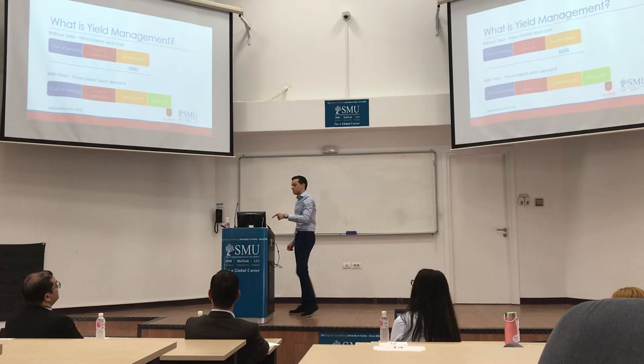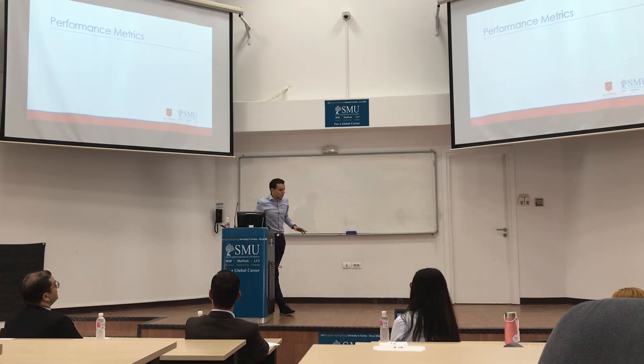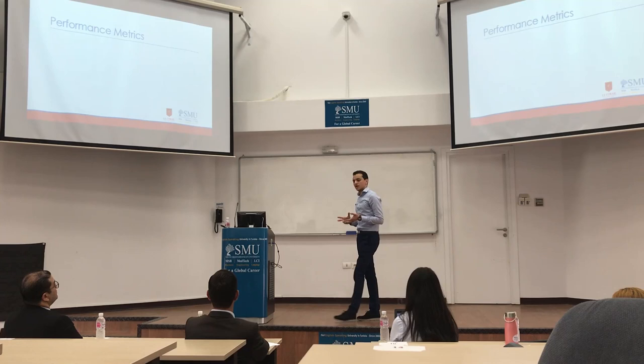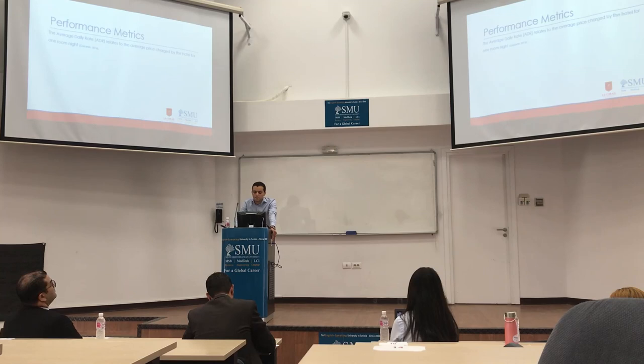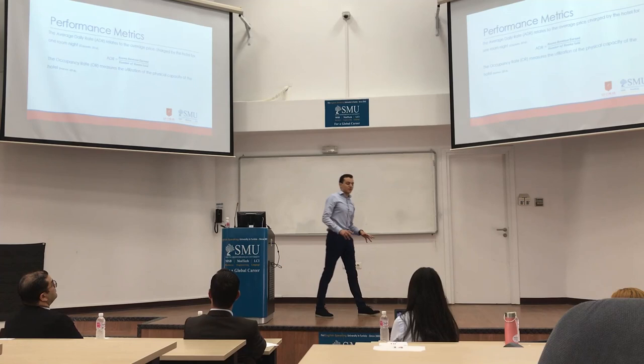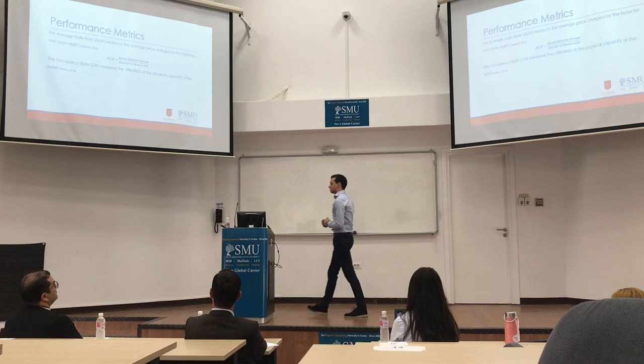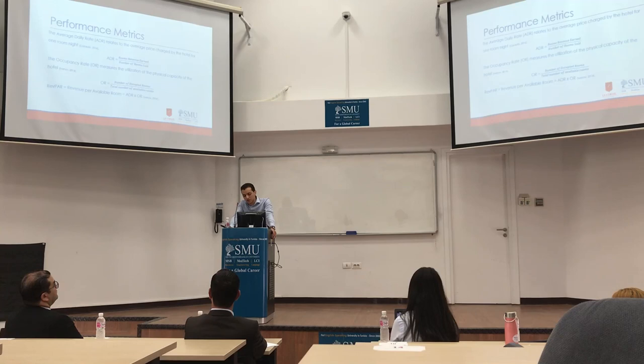Let's see how we can assess the performance of a given hotel and compare it to others. We have three KPIs: the Average Daily Rate (ADR); the Occupancy Rate, which is rooms occupied over rooms available; and RevPAR — Revenue Per Available Room — which is the product of these two KPIs.